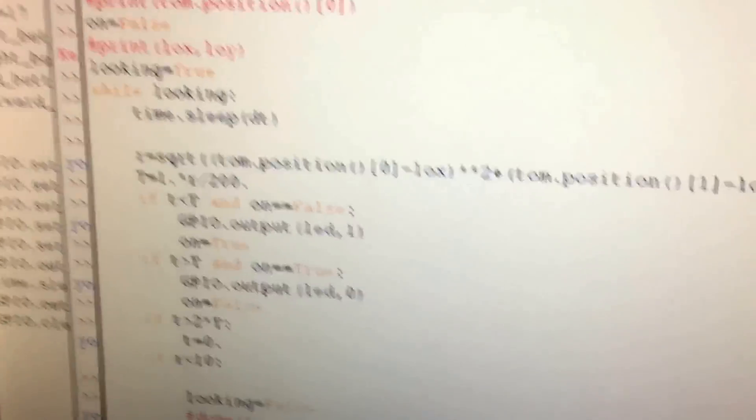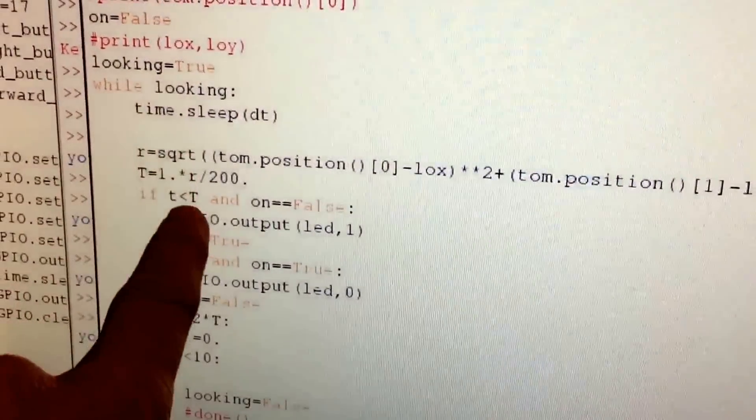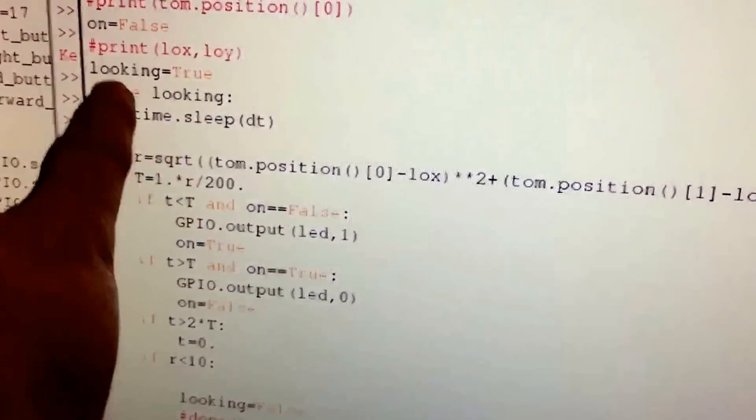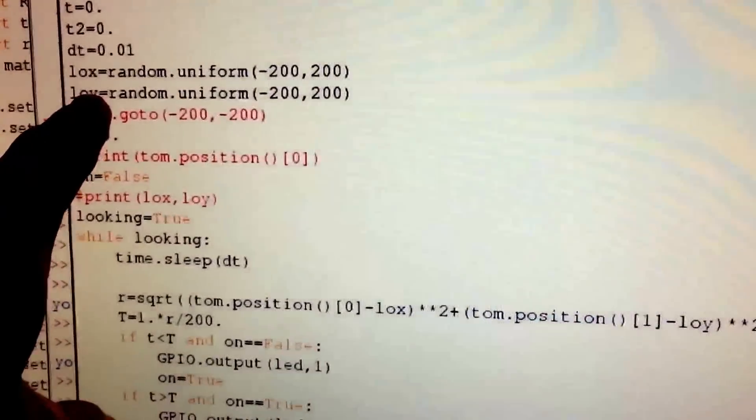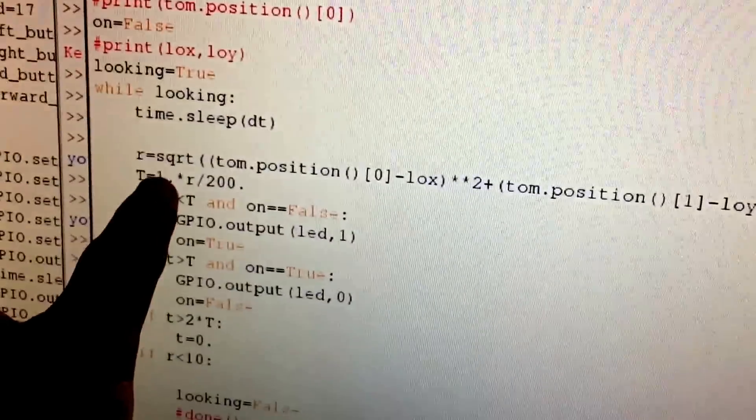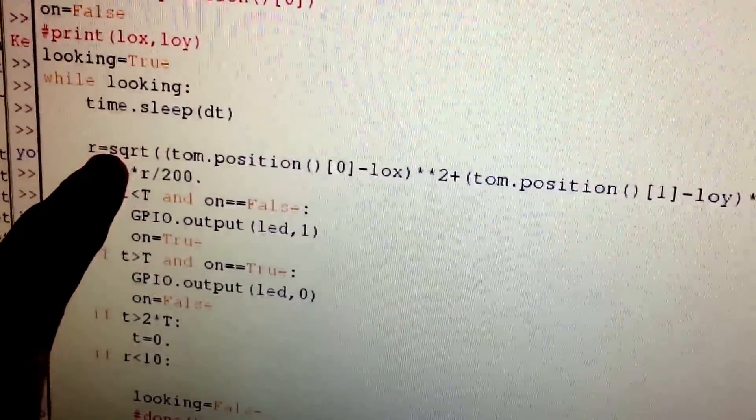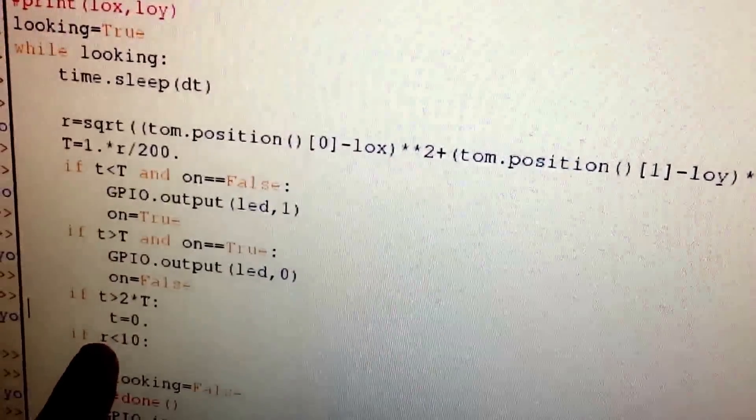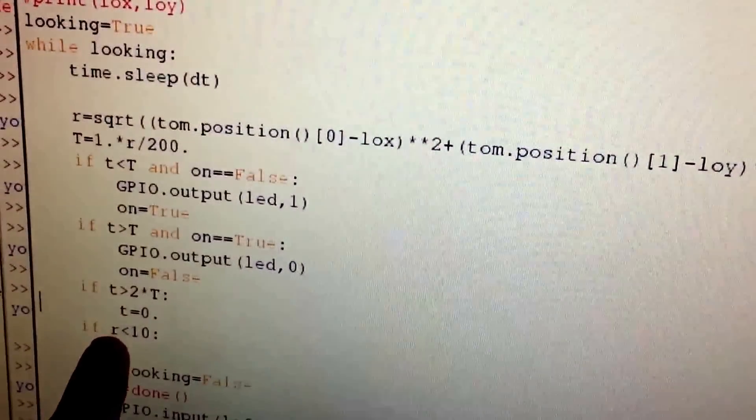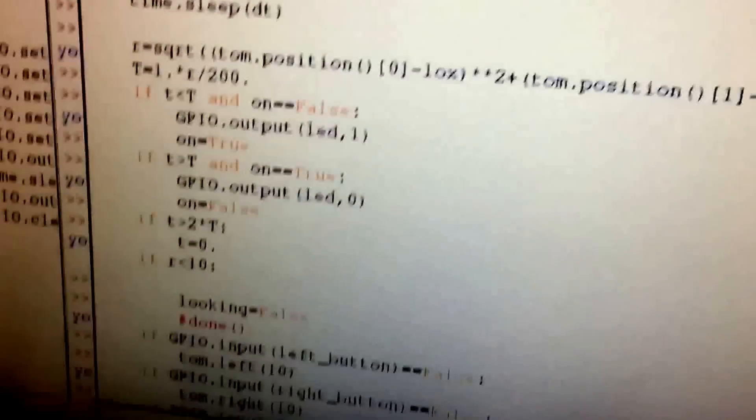So it just does this loop and then it calculates - it picks an X and a Y position in TURTLE, a random position somewhere on the screen, and it calculates the distance from the TURTLE to that point. And then it flashes the LED based on how far away you are from that. And what you want to do is look around for the hidden spot until you find it.